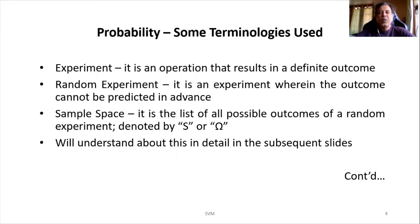Now let us move on to some of the terminologies which are being used in this probability theory. The first one is experiment. What do we mean by an experiment? It is nothing but an operation that results in a definite outcome. We can consider the general example which most textbooks follow: tossing of a coin. So when I toss a coin, I'm sure that either head will come or a tail will come.